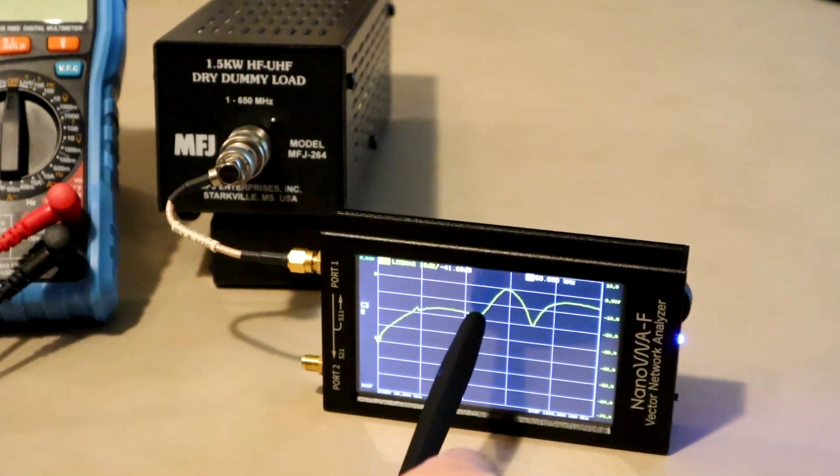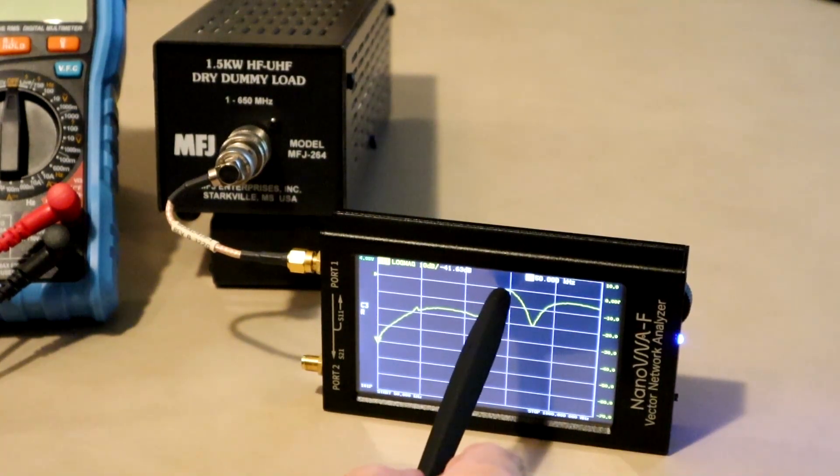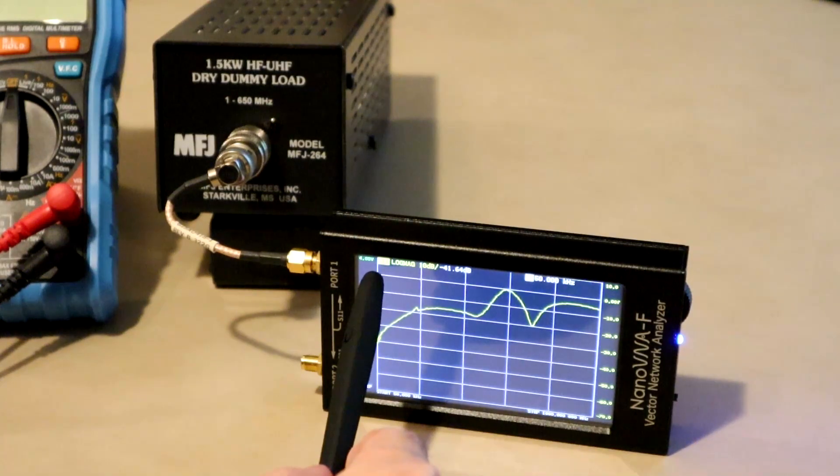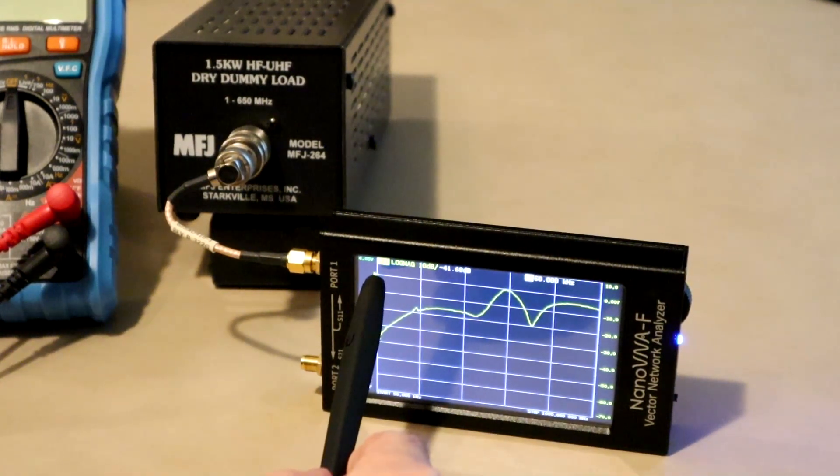This thing works pretty good up to about here or maybe even here. But at this frequency which is close to 600 megahertz it's not performing well at all. In fact, zero dB for a reflection coefficient or an S11 is actually full reflection. It's an infinite SWR.